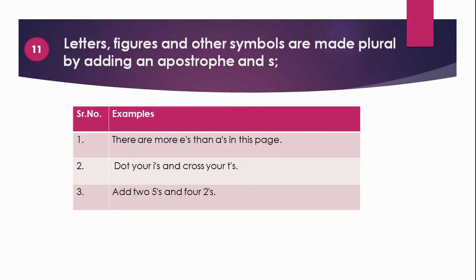Point 11: Letters, figures, and other symbols are made plural by adding an apostrophe and S. For example: 'There are more E's than A's in this page.' 'Dot your I's and cross your T's.' 'Add two 5's and four 2's.' So these are examples of letters converted to plural form with the help of apostrophe and S.